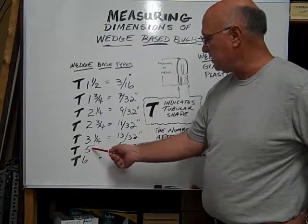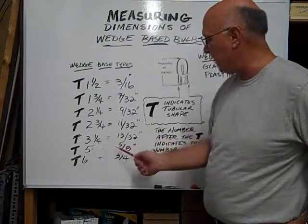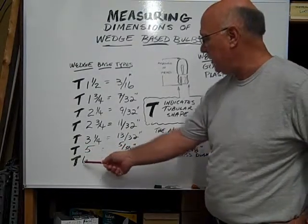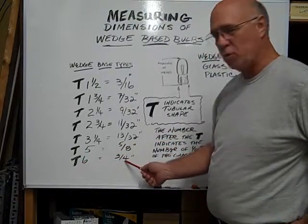As you see, that's a whole number, so it's actually five eighths, so a T6 would be three quarters of an inch.